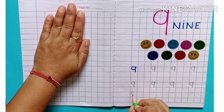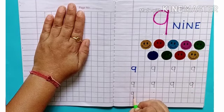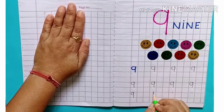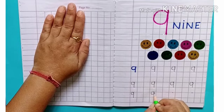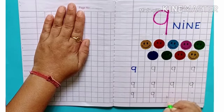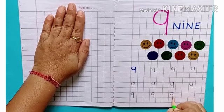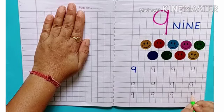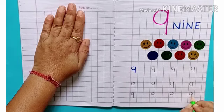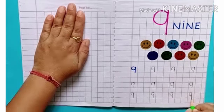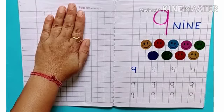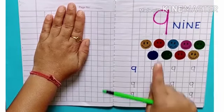Very good! Make C, go up and come down by making a standing line. Great! Now which number is this? This is number nine. So kids, now let us try to make the number nine.